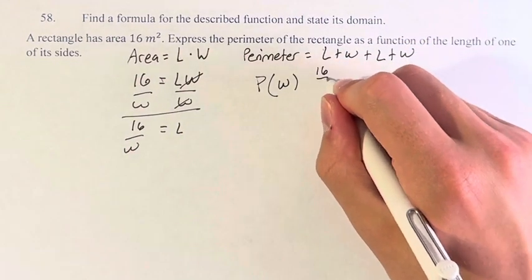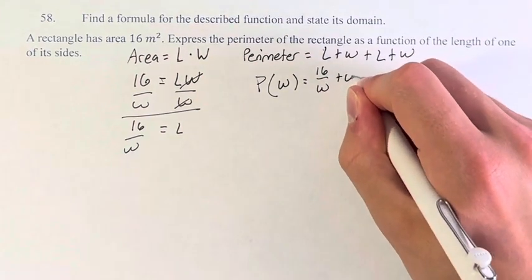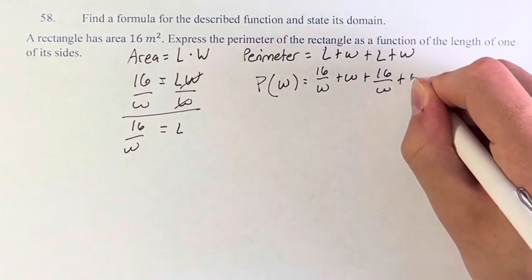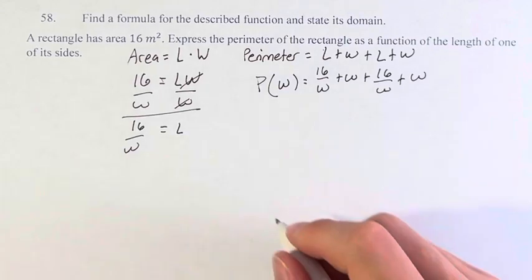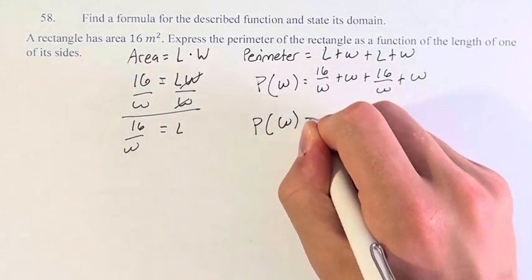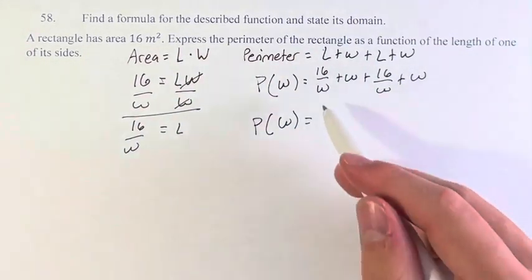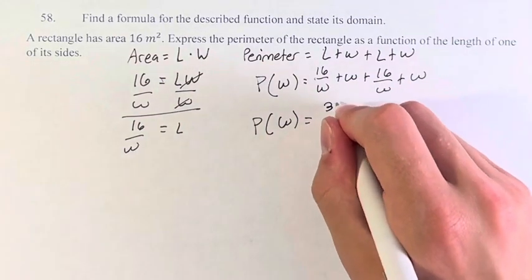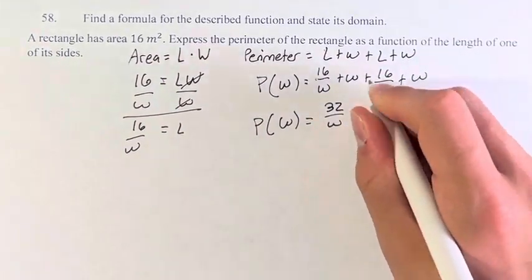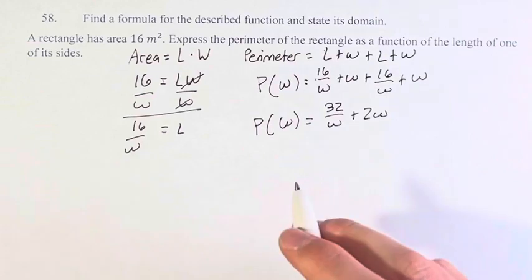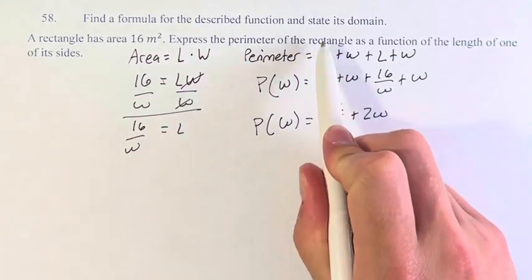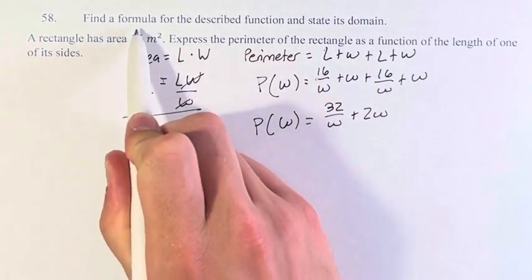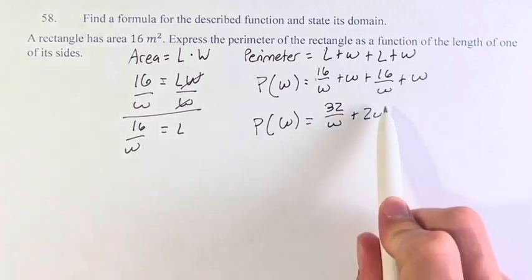16 over W plus W plus 16 over W again plus W again. Now, we have a function that is only in terms of W. 16 plus 16 is 32 over W plus 2W. And this is the perimeter of the rectangle, which has area 16 meters squared as a function of the width.